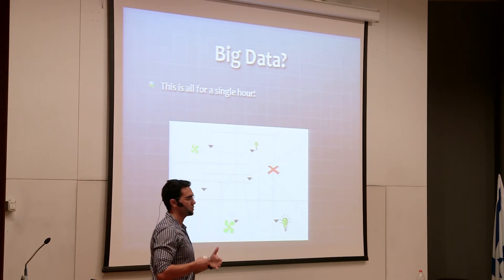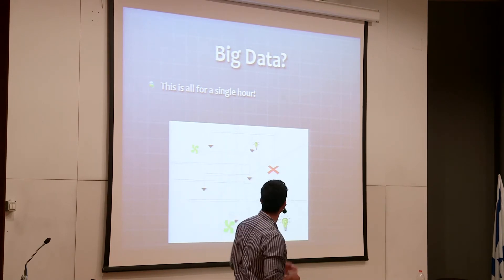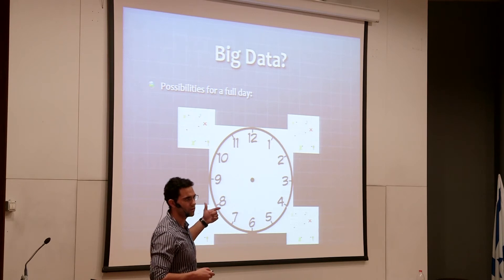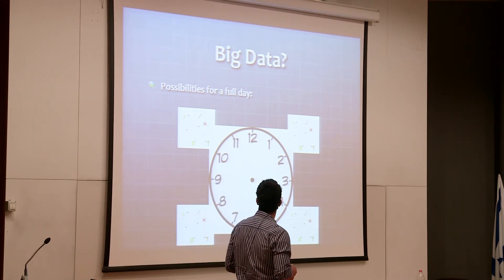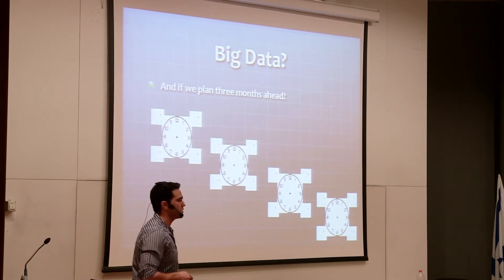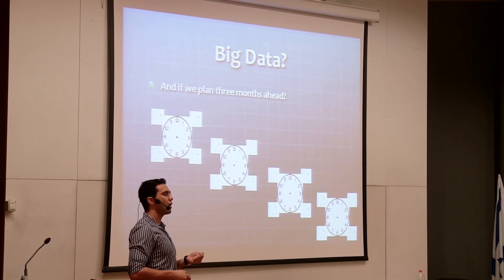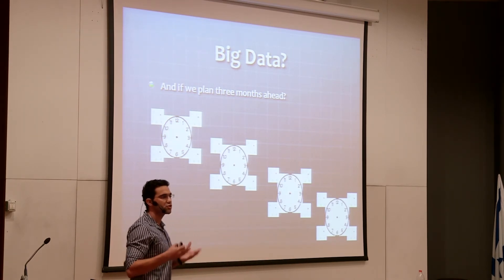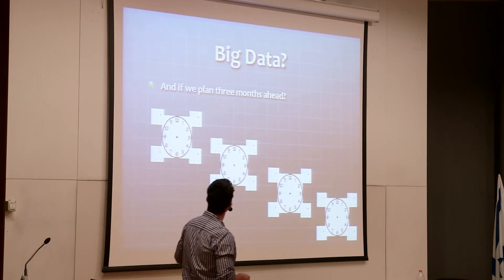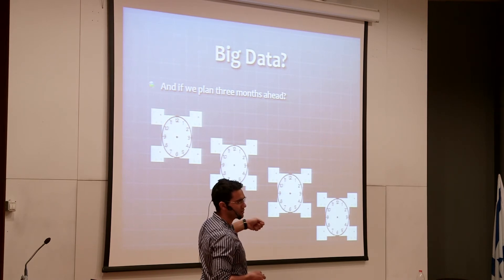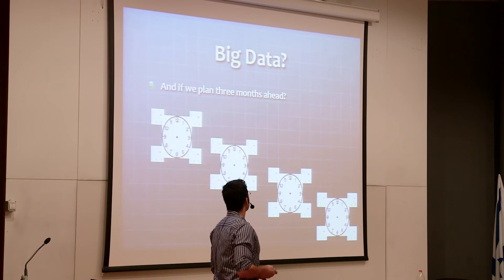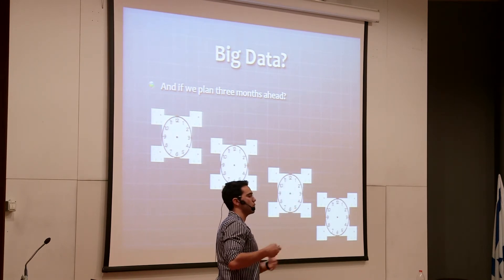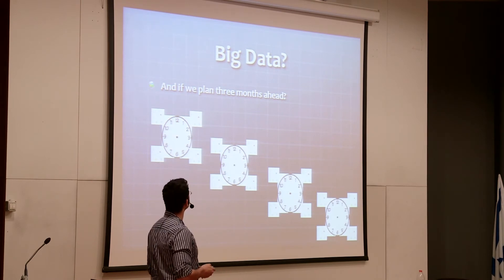Think of the possibilities for a full day — we need to monitor this process around the clock and prepare for all those huge numbers of events. What if we're planning three months ahead for maintenance? Say we need to take a line offline — that changes the network topology. We need to know how each hour of each day of the next three months will behave under uncertain future demand and wind profiles.